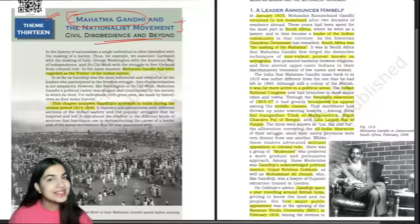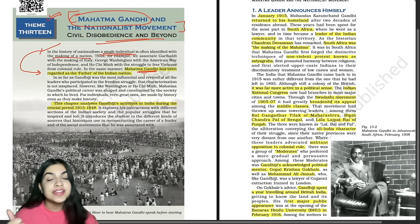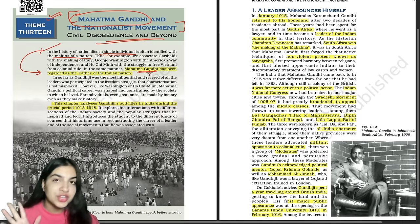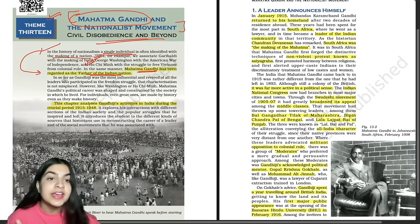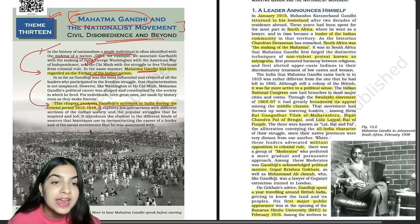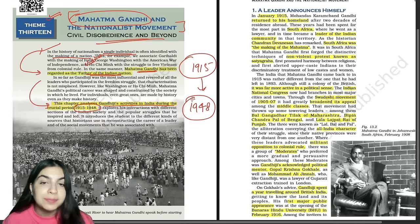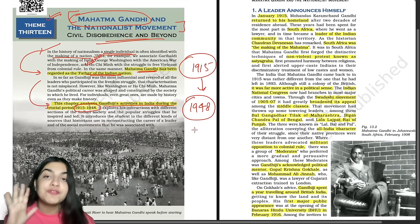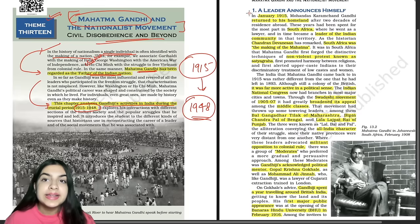In the history of nationalism, a single individual is often identified with the making of a nation. In India, that individual is Mahatma Gandhi ji — that is why his picture is on Indian rupee notes. Just as George Washington is for America and Ho Chi Minh is for Vietnam, similarly Mahatma Gandhi is the Father of the Indian Nation. This chapter analyzes Gandhi ji's activities in India during the crucial period from 1915 to 1948.